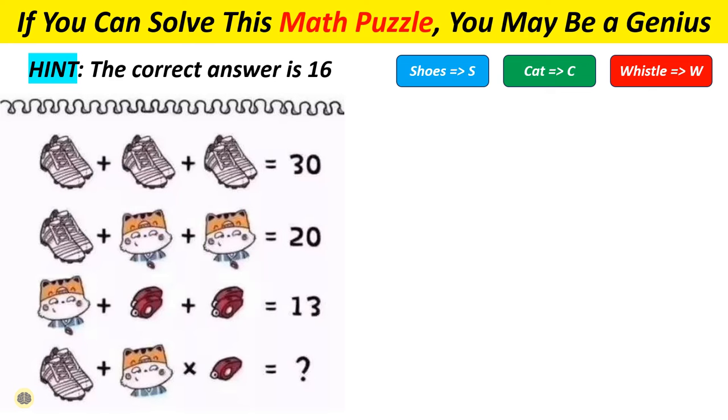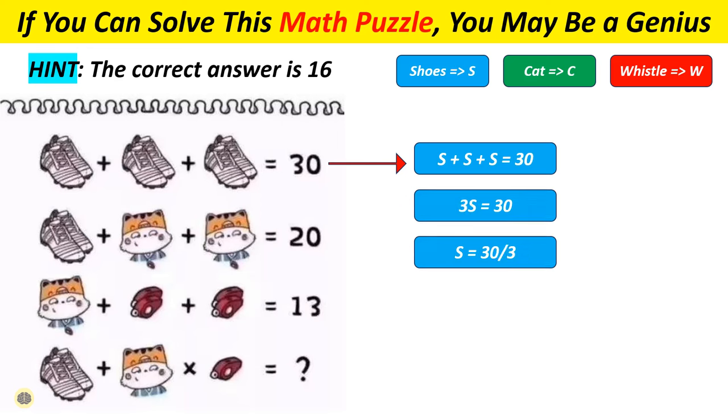The first equation sets up the whole math puzzle. Three pairs of shoes added together equal 30. That is S plus S plus S equals 30. So divide 30 by 3. Each pair of sneakers represents the number 10. This is easy enough.